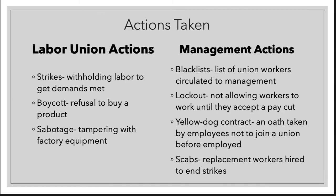A lockout was where management literally locked the doors and did not allow workers in until they accepted the given conditions. Workers were not paid during a lockout — there was no unemployment, so they had no paycheck, and even a paycheck at a place with poor conditions was better than no paycheck and a starving family. Yellow dog contracts were agreements given to employees before hiring, requiring them to promise never to join a union as a condition of employment.